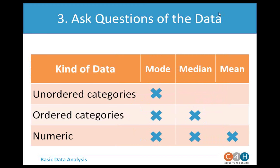Let's talk about different kinds of data. Some data, like gender, is unordered categories — categorical data. There's no lesser or greater value, so you can only find how frequently a value occurs and the most frequent response, the mode. Ordered categories, or ordinal data, can be lined up but aren't true numbers — you can find the mode and median but not the mean. You can find the mean of truly numeric information, like number of sexual partners or heights — things that are genuinely numbers and can be ordered.